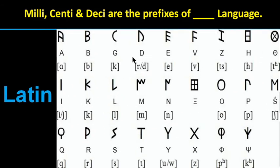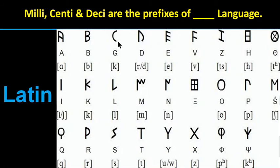Milli, centi, and deci are the prefixes of Latin language. In this picture, we can see some shapes of Latin alphabets — A, B, Z, D, E. There are some similarities between English and Latin alphabets, but the shape of Latin alphabets is also very different from English alphabets.